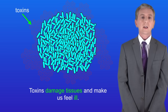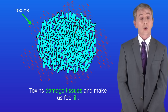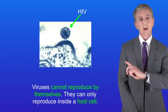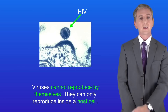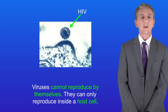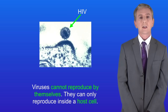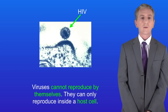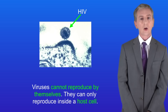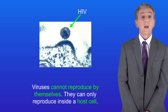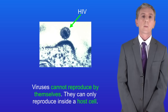Another type of pathogen that causes a lot of human diseases are viruses. Here is the virus HIV, which can lead to AIDS. Viruses are very different to bacteria because viruses cannot reproduce by themselves — they can only reproduce inside a host cell.